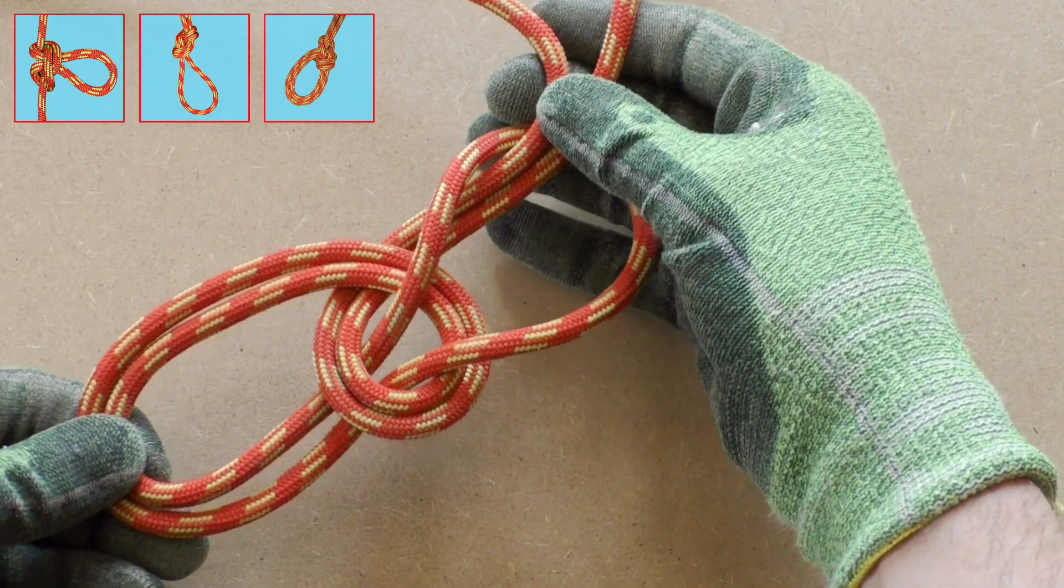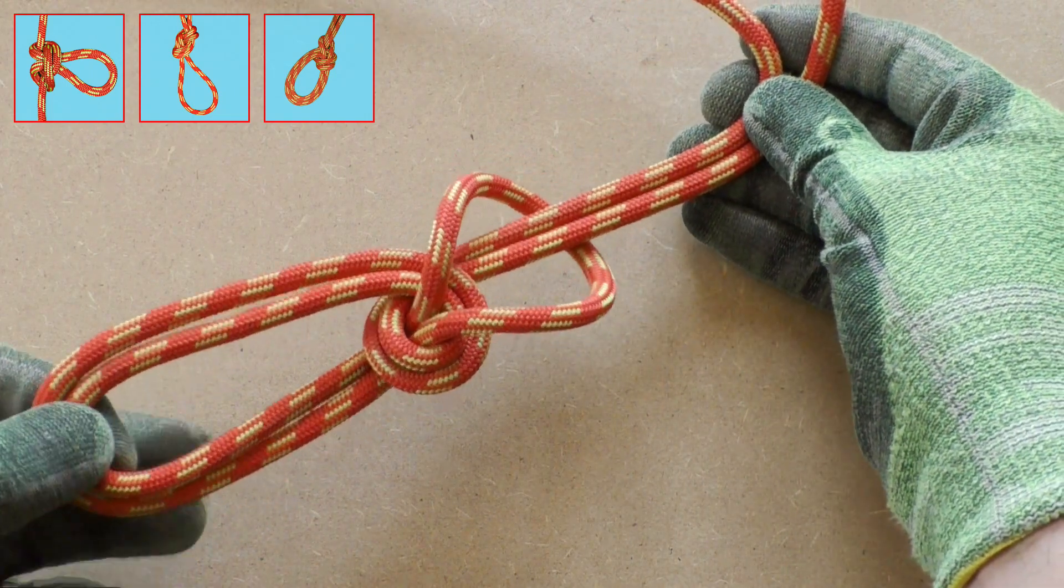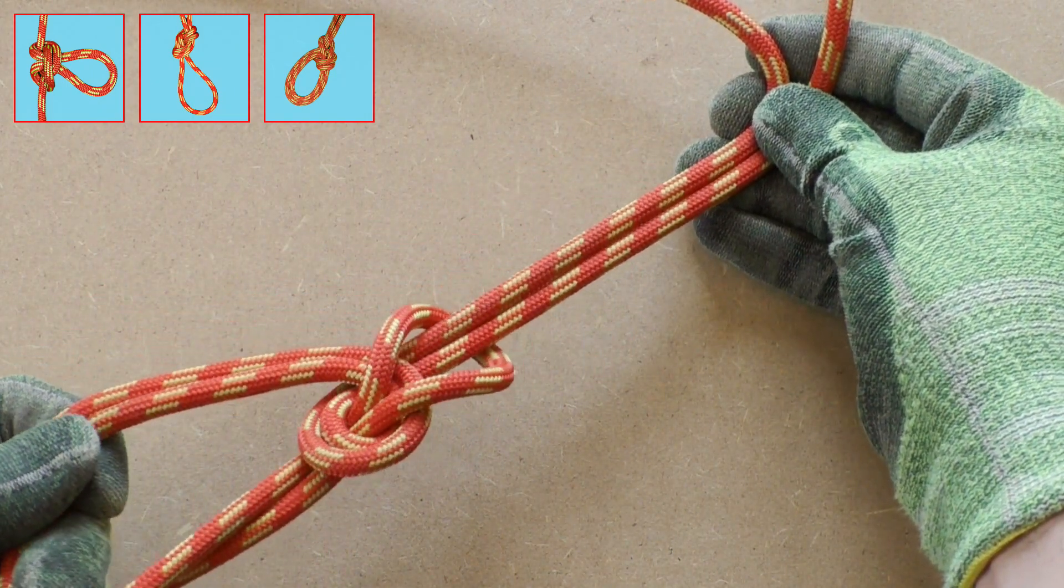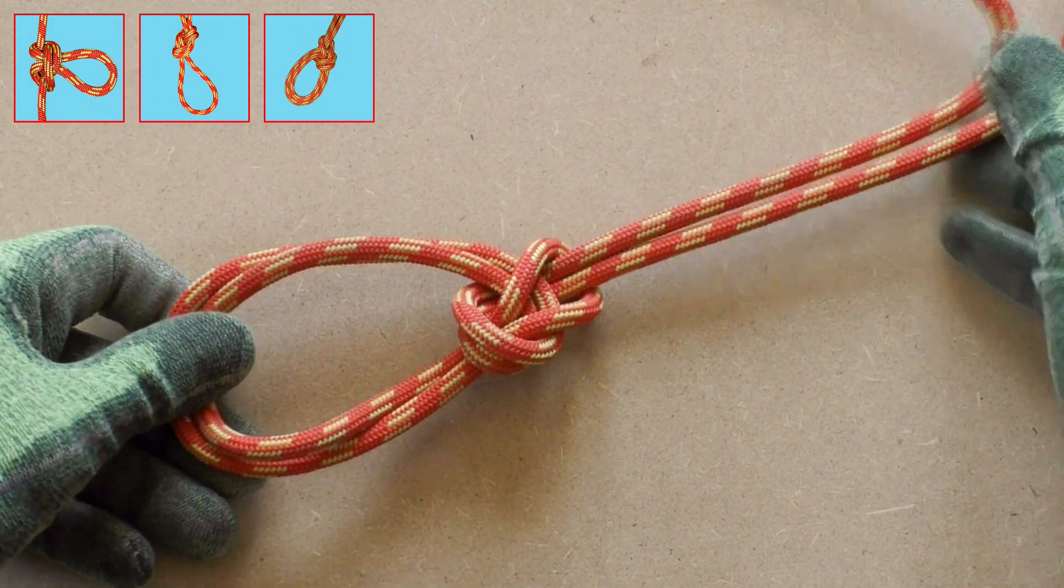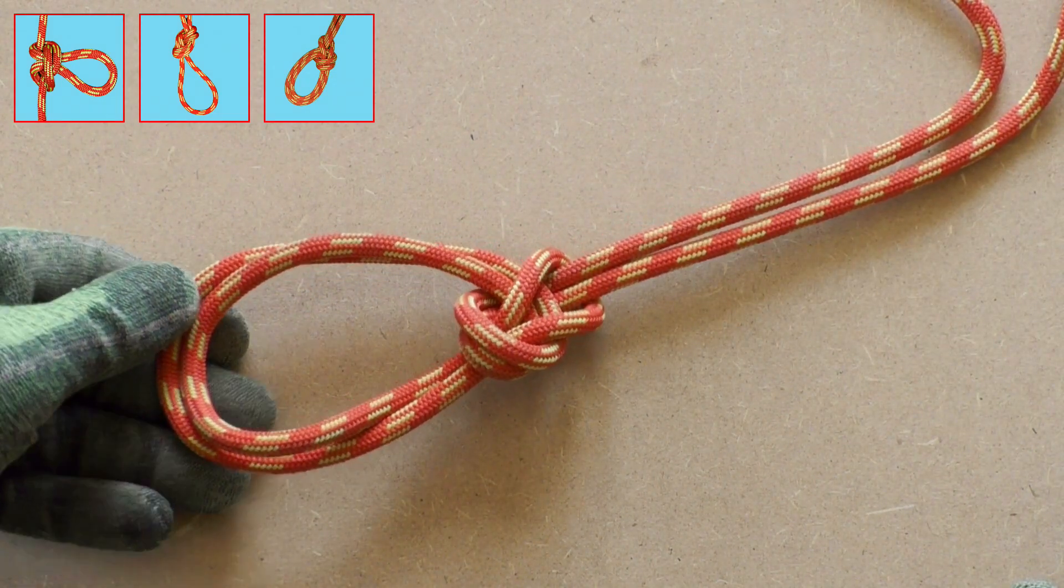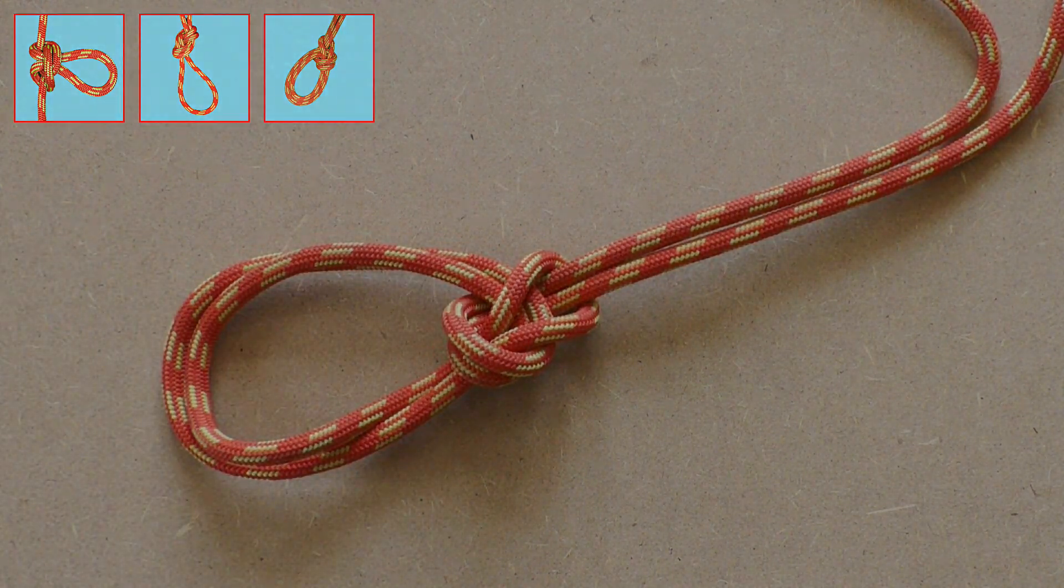Now we will dress the knot, that means making sure everything is aligned properly. Then we set it or tighten the knot. This can be done by holding the standing part and pulling on the loops.